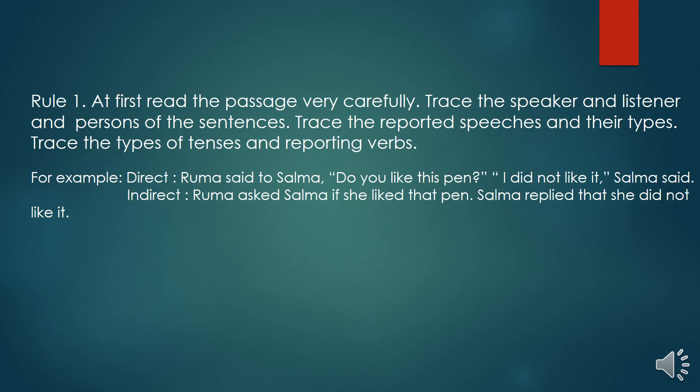Rule number one. At first, you have to go through the passage or text very carefully. Then, you have to trace the speaker and the listener of the passage. You have to also specify the versions of the sentences. Then, trace the reported species and their types. Trace the types of sentences and reporting verbs.